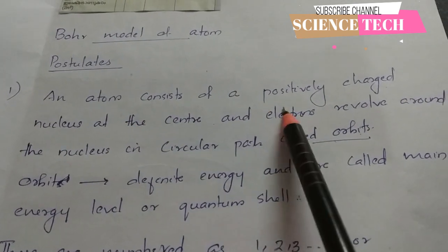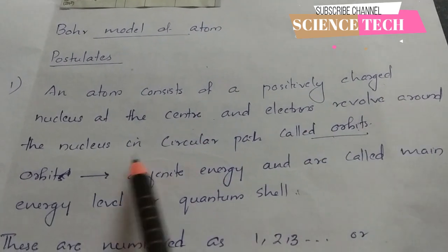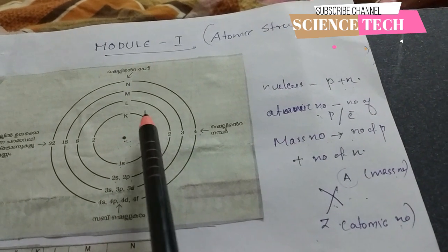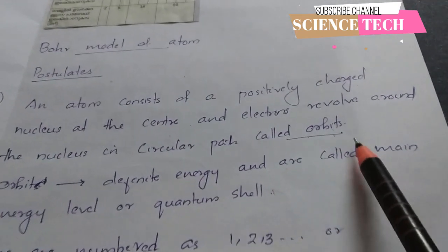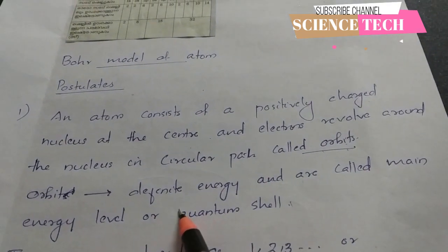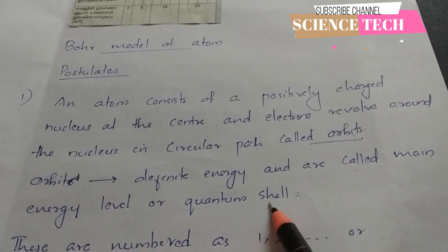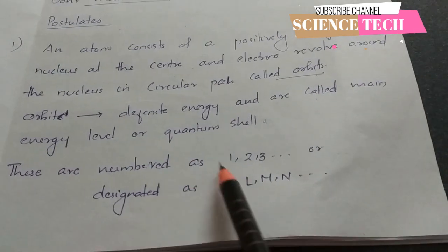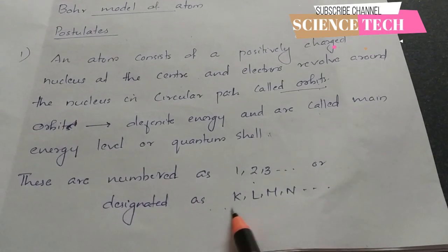In the Bohr atom model, at the center there is a positive charge nucleus. Electrons move in orbits, also called quantum shells, designated as K, L, M, and so on.